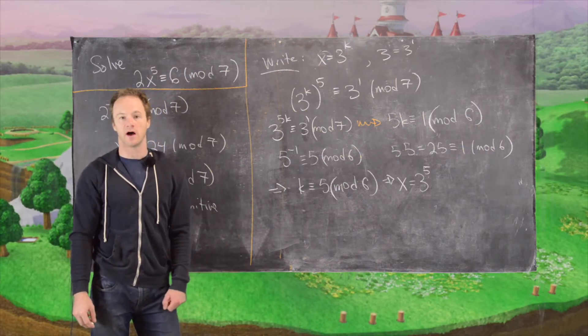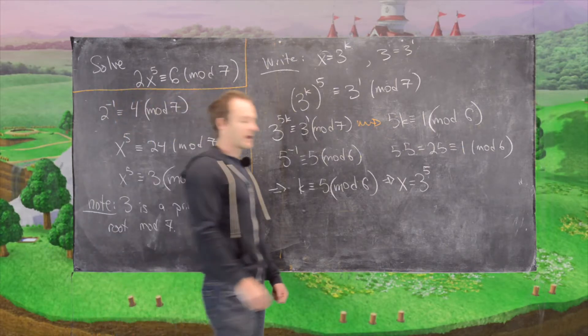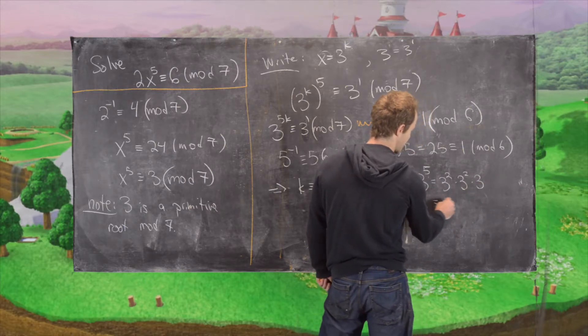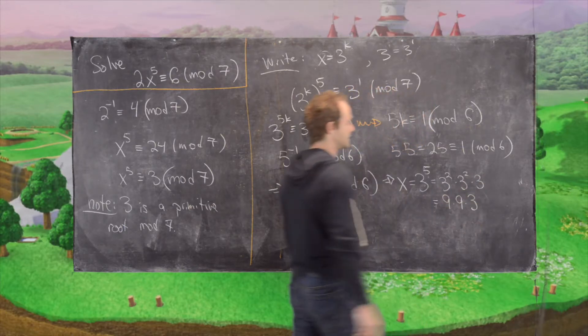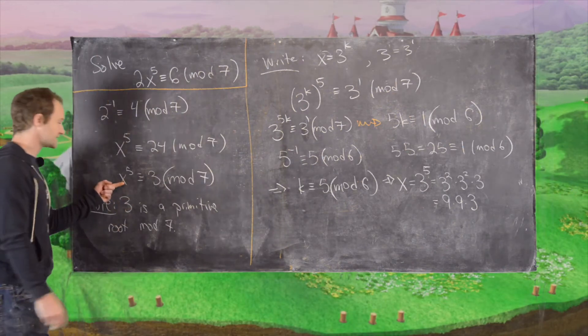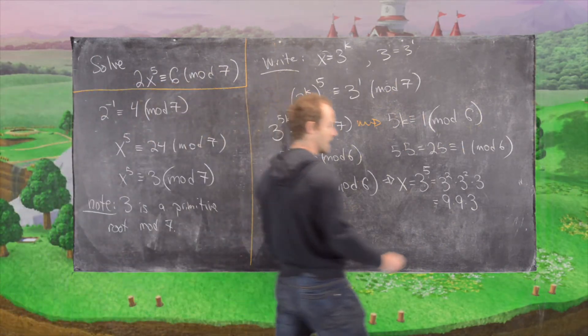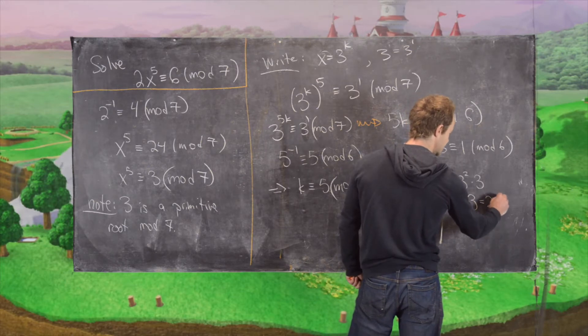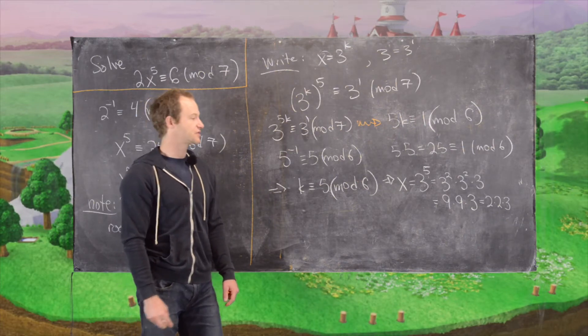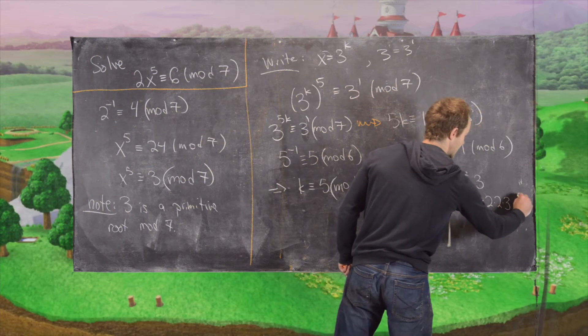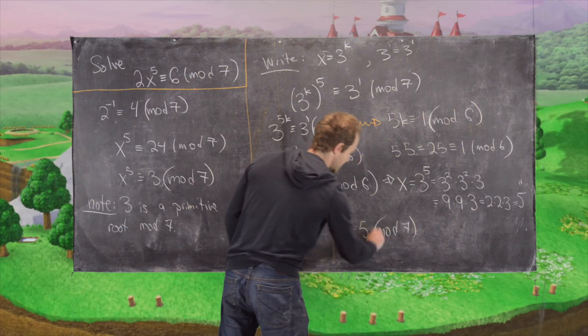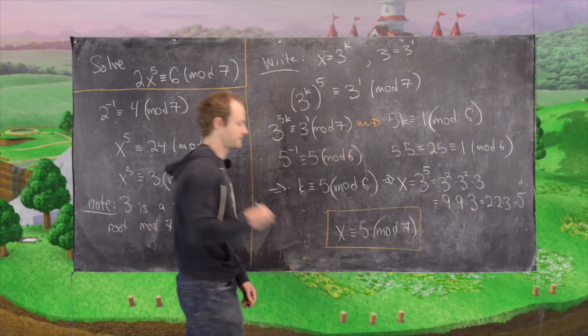So I'll break down this 3 to the 5th power in a way that we can calculate it quickly. Notice that's the same thing as 3 squared times 3 squared times 3. But that's 9 times 9 times 3. But we know that 9 mod 7, because now we're working with x, and when we're working with x, we're back to mod 7. So 9 mod 7 is 2. So that's the same thing as 2 times 2 times 3. So 2 times 2 times 3 is 12. And 12 is 5 mod 7. So our solution here is x is congruent to 5 mod 7. And that is our final answer.